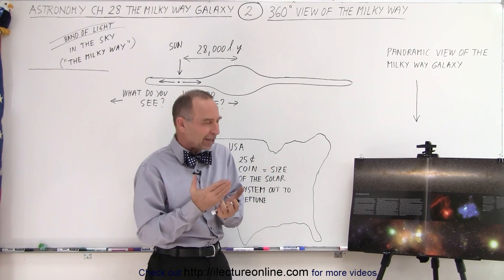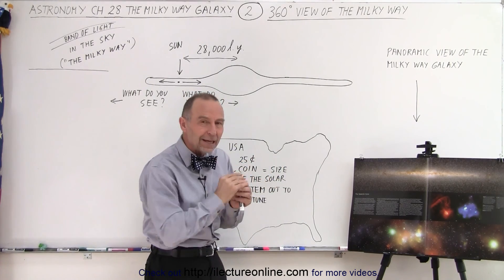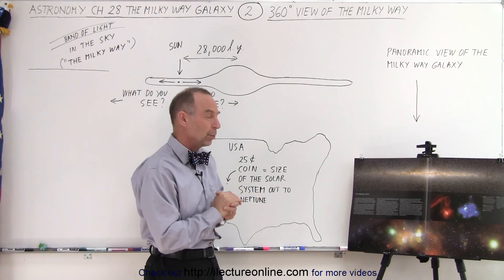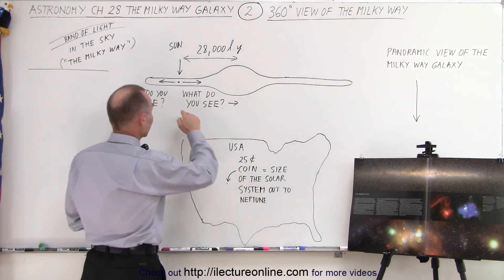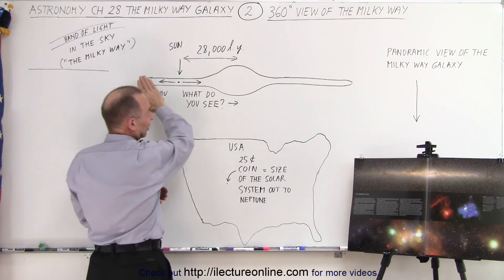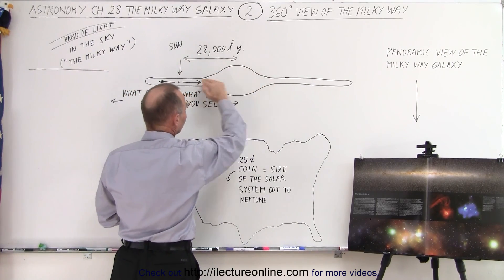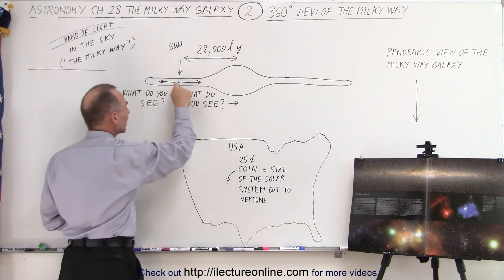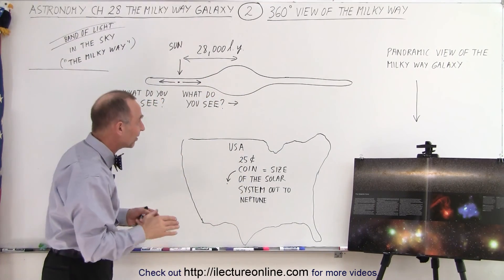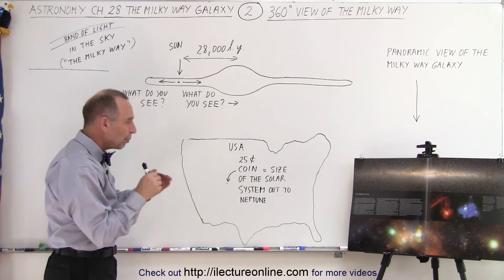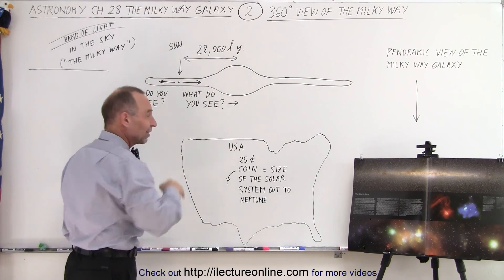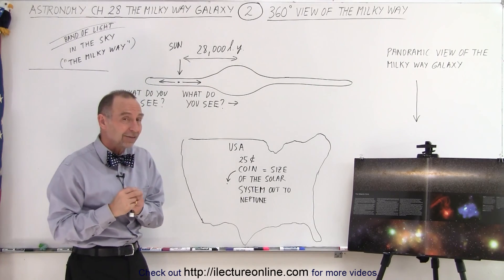It turns out it's actually a 360-degree panoramic view of our galaxy. We're right here — this is the general structure of the galaxy in a cutaway view. We have the central bulge and the galactic disk. Here's the sun, about 28,000 light years away from the center. So what will we see if we look in the direction of the disk, since we live right inside it?